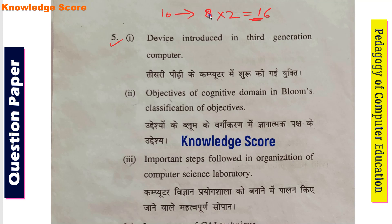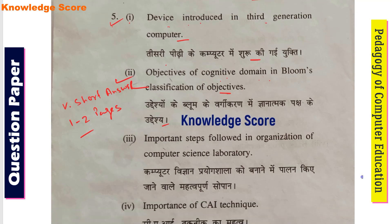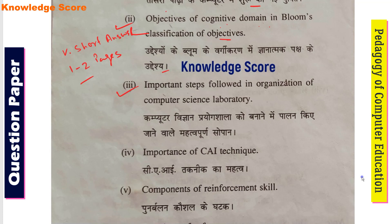The questions in Section C include: first, device introduced in third generation computers; second, objectives of cognitive domain in Bloom's classification; third, important steps followed in organization of a computer science laboratory; fourth, importance of CAI techniques. For good scoring, you should answer 1 to 2 pages per question.